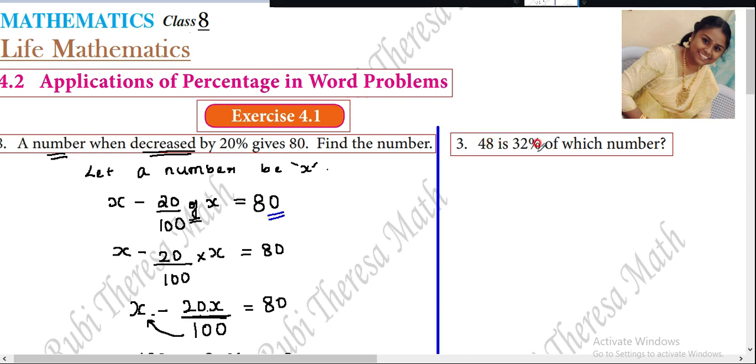48 is 32% of which number? Look at the question carefully. 48 is the value we get. Is 32 percentage, 32% of which number? This value we don't know. What can we do? x, we assign a variable for it. We need to find the number. 48 is the value we get when 32 percentage of a number is taken. We need to find the number. So let the number be x.